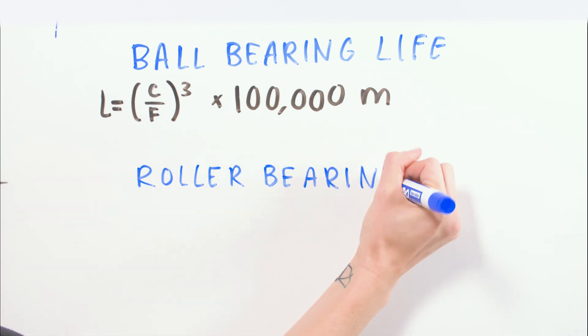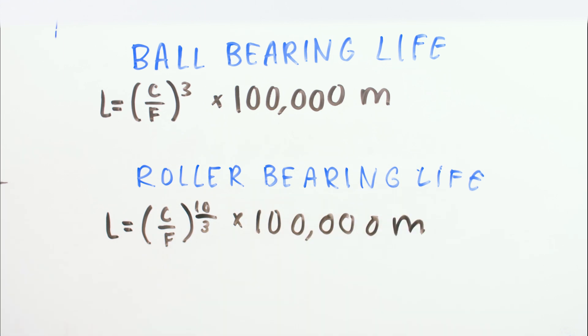The way to do this is to use the mean equivalent dynamic load, which is the amount of constant loading that would produce the same effect on bearing life as all the various loads and times combined.